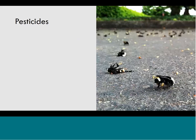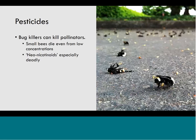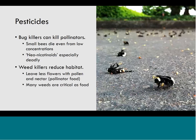Another threat to pollinators is pesticides — bug killers and weed killers. Bug killers can kill pollinators directly; small bees can die even from low concentrations. There's a special class called neonicotinoids that is especially deadly for pollinators. Weed killers don't kill pollinators directly, but they reduce habitat by eliminating flowers with pollen and nectar — the pollinator food. Many weeds are critical food sources for pollinators, including clover, dandelion, violet, and henbit.